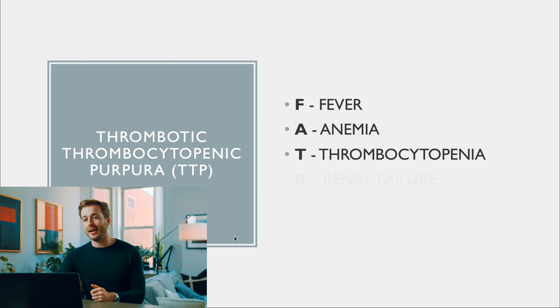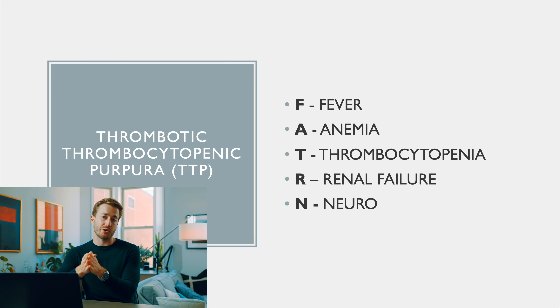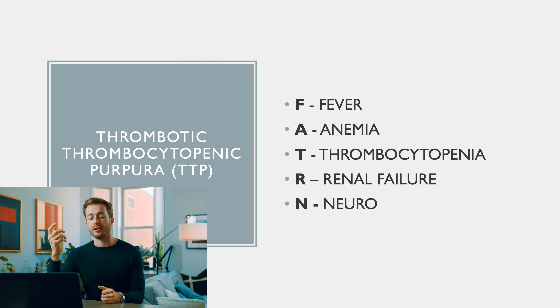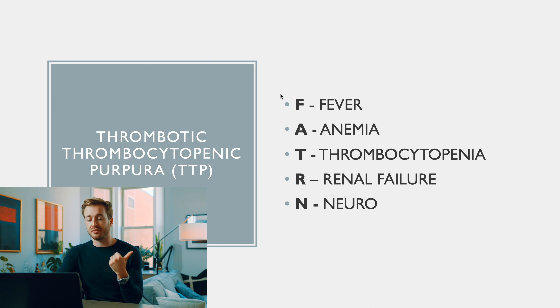The next mnemonic is FATRN — the signs of TTP (thrombotic thrombocytopenic purpura), a serious condition that can be fatal. Thrombotic means forming clots, thrombocytopenic means low platelets, and purpura refers to visible skin bleeding. FATRN stands for fever, anemia, thrombocytopenia, renal failure, and neurological abnormalities.